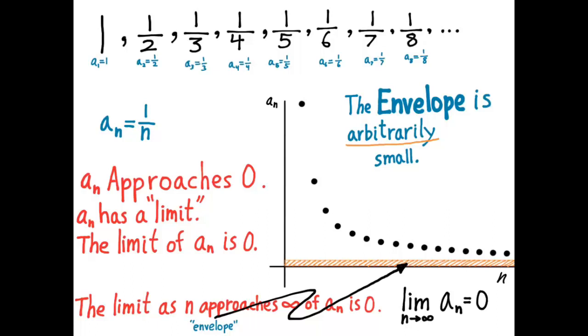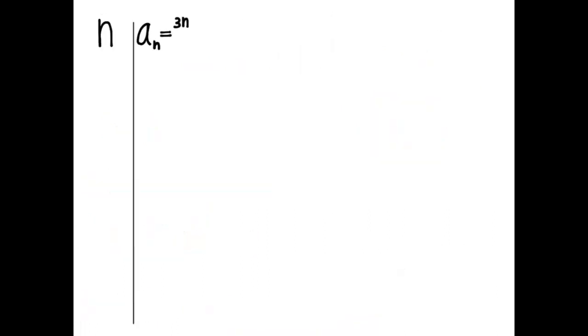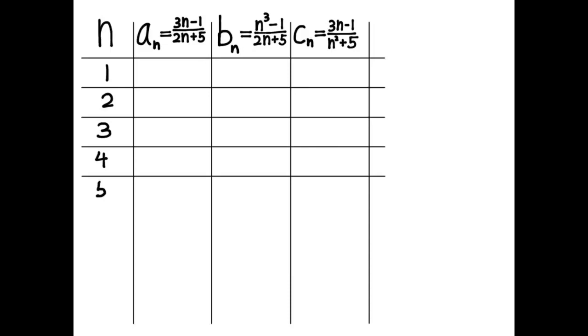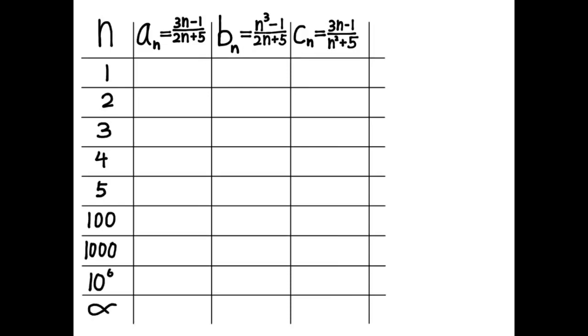Now, let me have you study a few other sequences. Let me give you a general term, A_N, B_N, and C_N, for three different sequences. And I'd like you to study these to understand some of the different behaviors. I'll start off the first one for you. So just use your calculator and compute the values and fill in this table. I want you to pause the video now and get out your calculator and try to fill in this entire table.